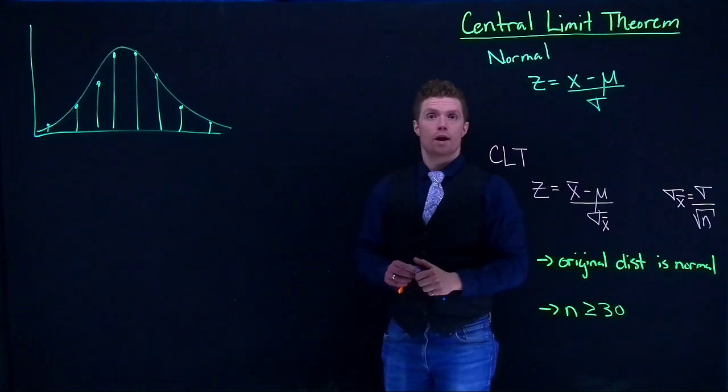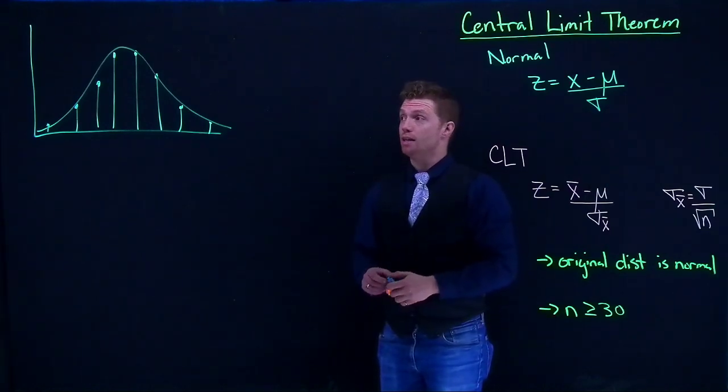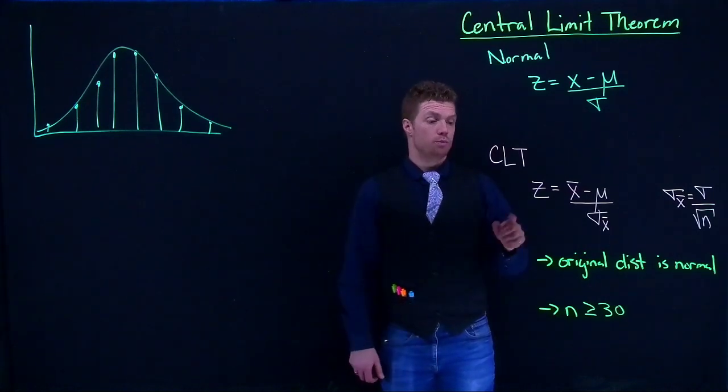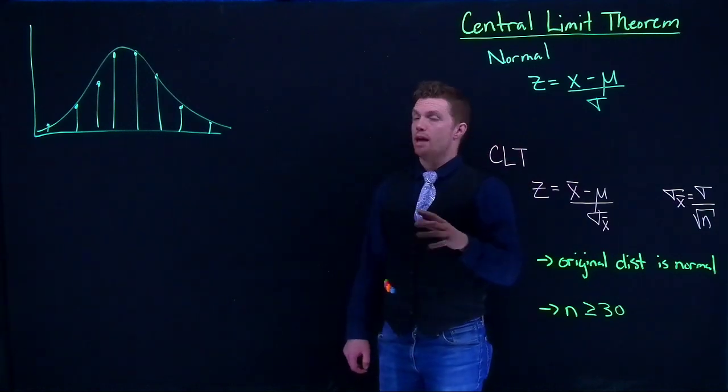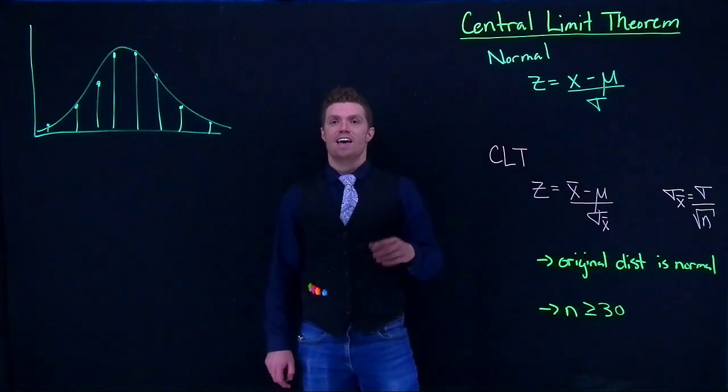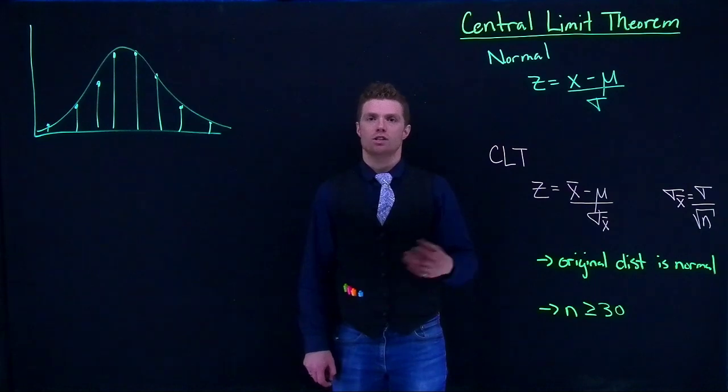There's actually a way that we can take a look at this and we can actually model it as essentially a normal distribution with the central limit theorem. Now what has to be true is we have to see an appropriate number of successes and an appropriate number of failures in our scenario.